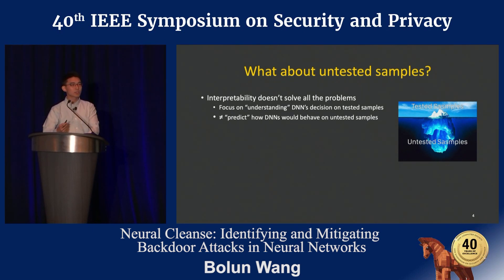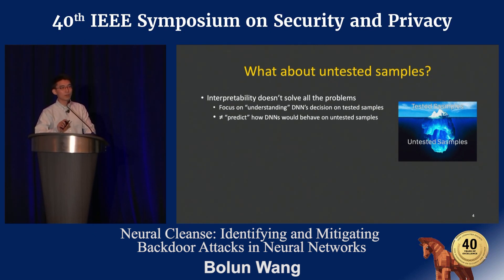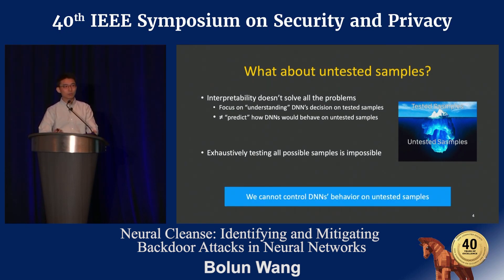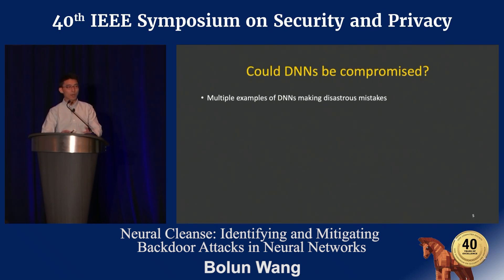A lot of recent work brings out this concept called interpretability of deep learning models. It's a very vague concept, but most of them are trying to understand why these models are behaving on those tested samples. But it doesn't mean that we can predict how the models are going to behave on untested samples. It's simply impossible to exhaustively test all the samples out there. The unfortunate truth is that we cannot really control how deep learning models are going to behave on untested samples. We have already seen many examples: self-driving cars running into accidents, voice assistants misunderstanding what we say, and translation software throwing out gibberish.